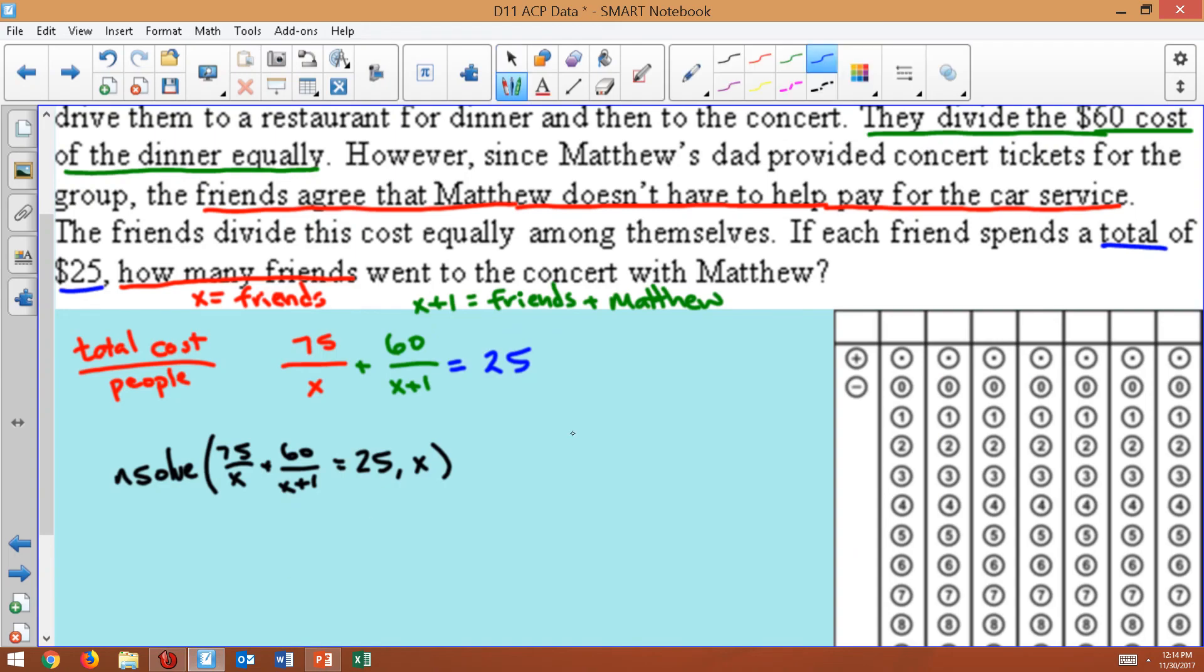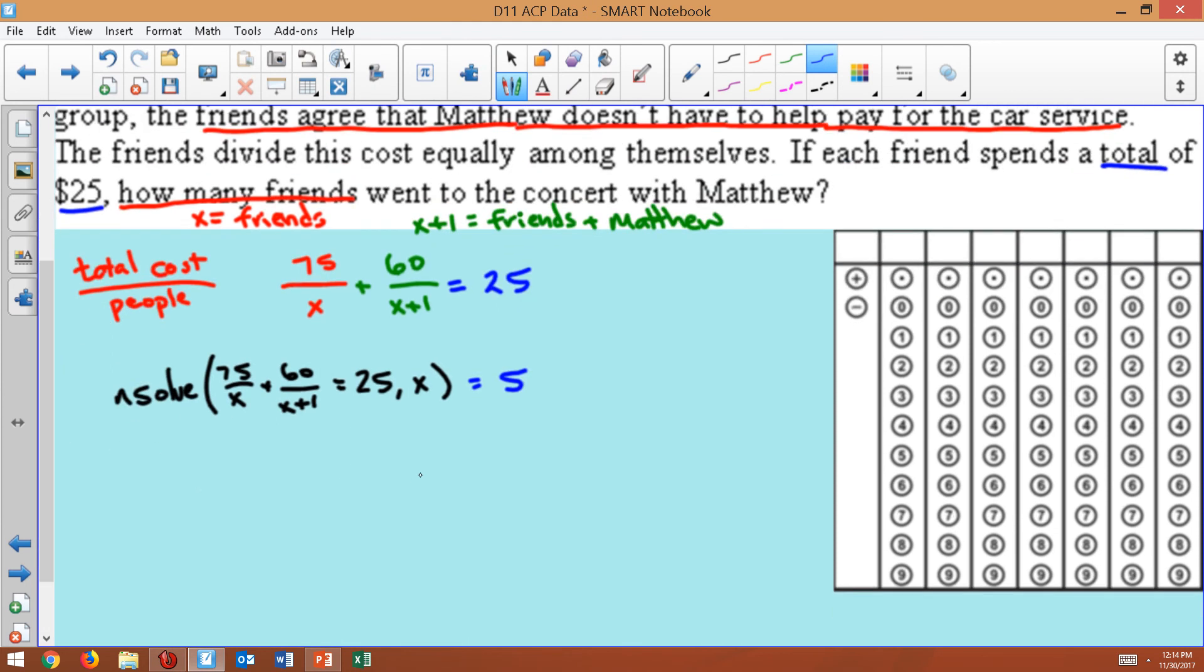If you insolve this, this would say the same thing. It would equal five. Or by graphing, we get the same answer, five. So the answer here is five friends.